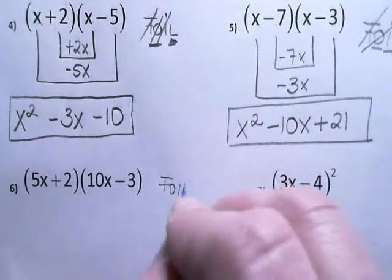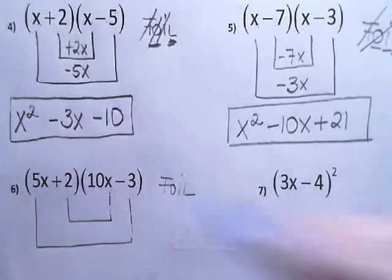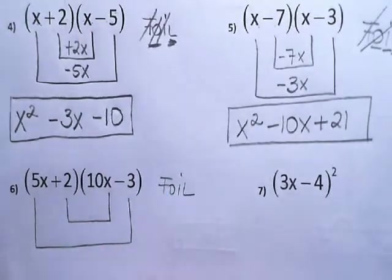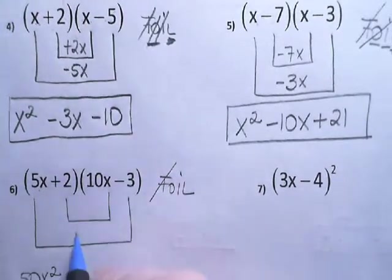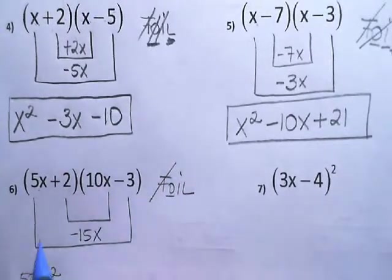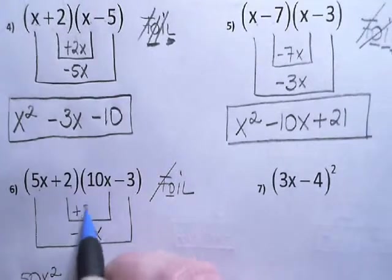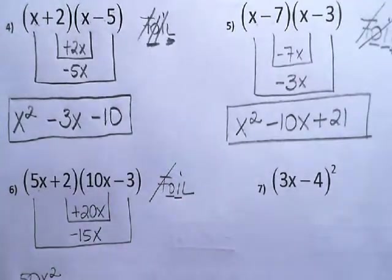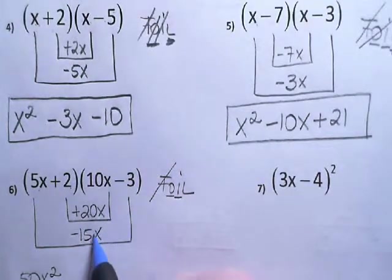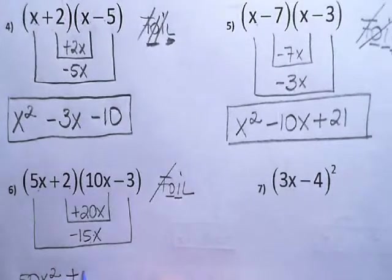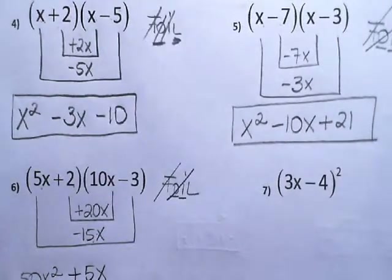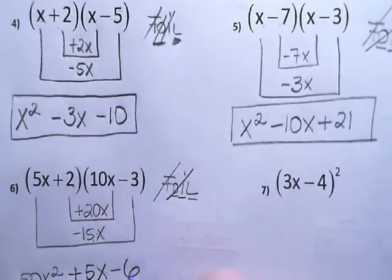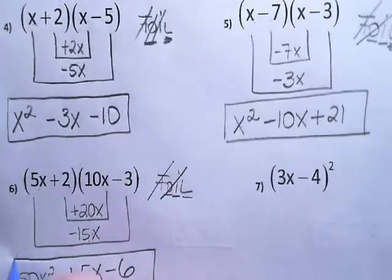Okay, I'm going to keep FOIL in mind. Draw my boxes. First times first: 5x times 10x is 50x squared. So the F is done. I'm going to do the O: 5x times negative 3 is negative 15x. So the O is done. Inside: 2 times 10x is positive 20x. So the I is done. Now we're going to combine them: 20 minus 15 is positive 5x. So we're done with those two. And then the last: 2 times negative 3 is negative 6. And that's our answer.